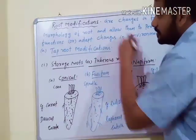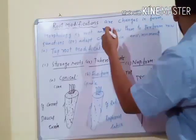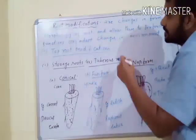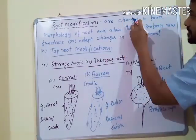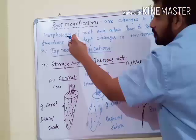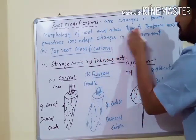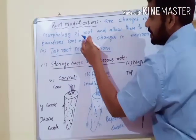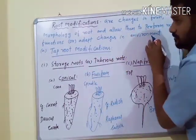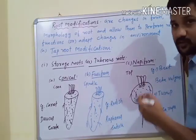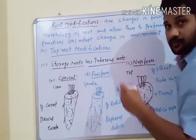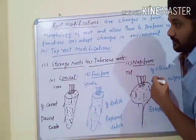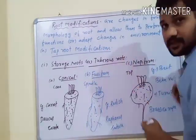Good morning students, today we will discuss another important topic: Root Modifications. Root Modifications are permanent changes in the form or morphology of a root that allow them to perform various new functions or to adapt to changes in the environment. Root Modifications are usually of three types.